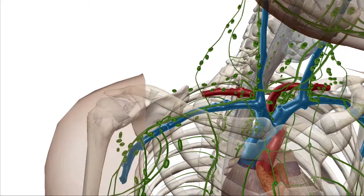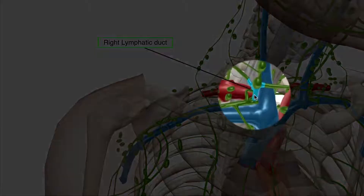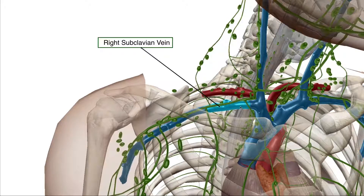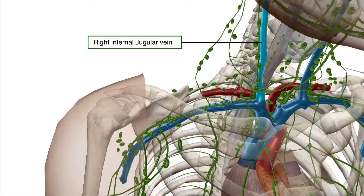There are two main ducts you must know for the board exam. The first one is the right lymphatic duct, and the second one is the thoracic duct. In this animation, you can see the right lymphatic duct right here. The right lymphatic duct drains the entire right side of the body, anything above the diaphragm, into the junction of the right subclavian and internal jugular vein. Here is your right subclavian vein and this is the right internal jugular vein, and you can see the right lymphatic duct draining straight into it.